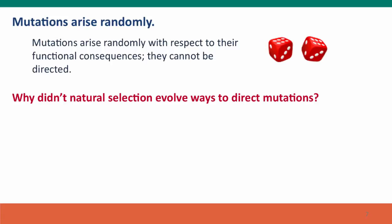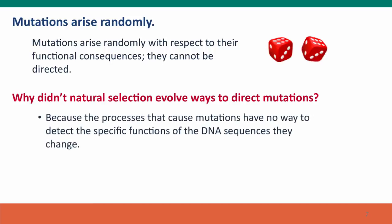Why not? Why didn't natural selection evolve ways to direct mutations? It would certainly be beneficial if we had ways to prevent bad mutations and promote good ones. Well, there are two reasons. First, the processes that cause mutations have no way to know the functions of the DNA sequences that they change. DNA polymerase replicates DNA — it knows nothing about the functions of the sequences it replicates. Introns, exons, junk DNA, genetic parasites — DNA polymerase can't tell them apart. It replicates them all, treats them all equally. It has no way it could ever tell them apart.